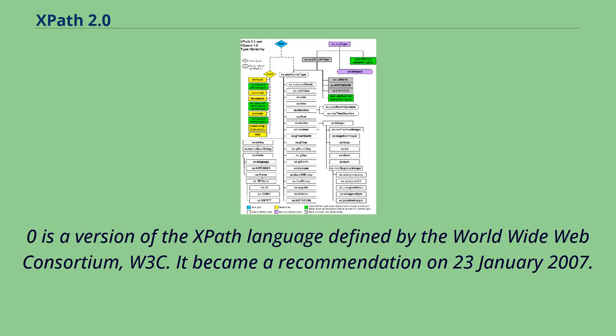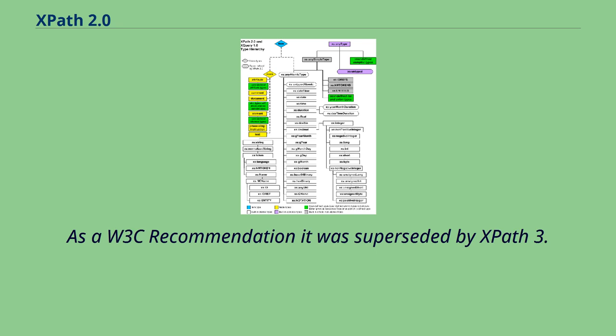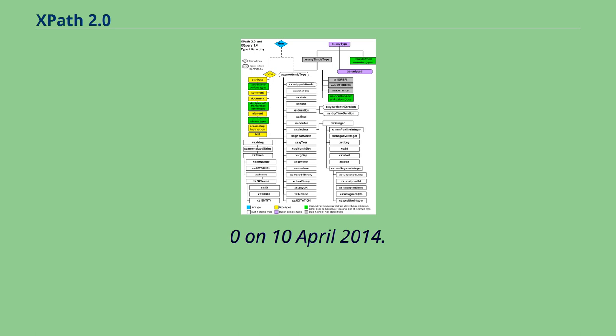XPath 2.0 is a version of the XPath language defined by the World Wide Web Consortium, W3C. It became a recommendation on January 23, 2007. As a W3C recommendation it was superseded by XPath 3.0 on April 10, 2014.